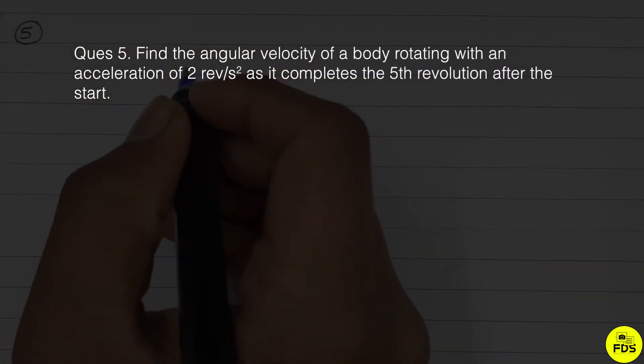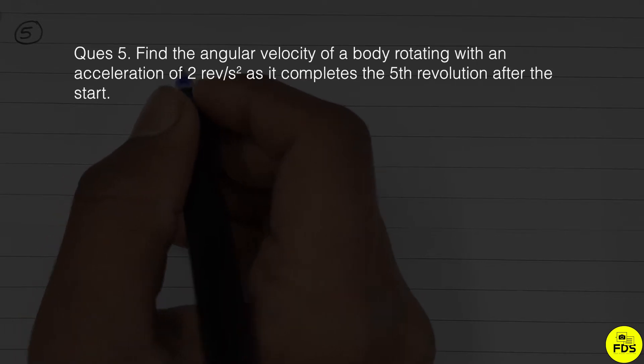Find the angular velocity of a body rotating with an acceleration of 2 revolutions per second squared as it completes the 5th revolution after the start.